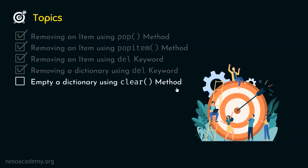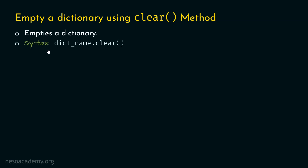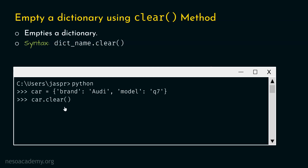The final topic is emptying a dictionary using the clear method. If the requirement is to empty a dictionary — not delete it — then we can use the clear method. The syntax is: dictionary name, dot, clear. Let's consider the same car example and type car.clear(). After hitting enter, we type 'car' again and hit enter. We get just empty curly brackets, confirming the car dictionary now exists but is completely empty.